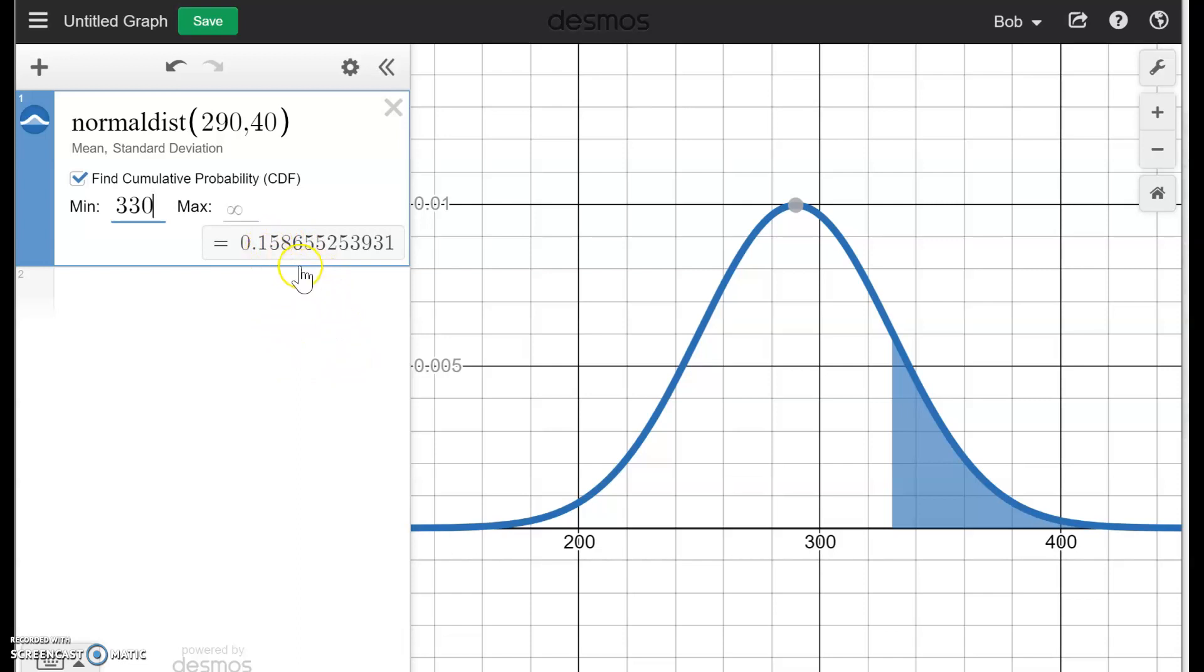Desmos here is using a much more complex formula to find its proportions. And 16% would be a just fine answer. If I want to find the probability that we are less than 270, well, my min, I want to be negative infinity. I'm just going to leave that blank, and I'm going to do a max of 270.